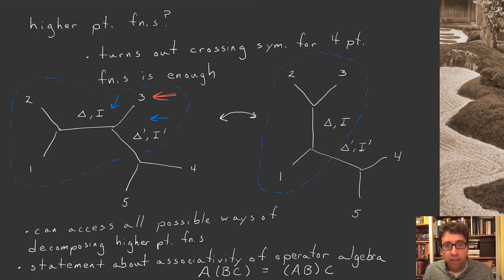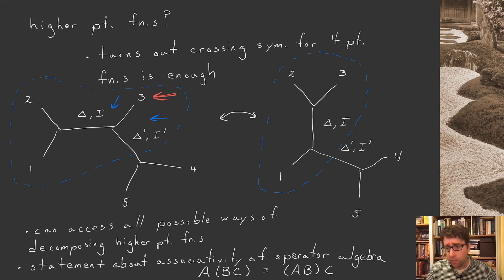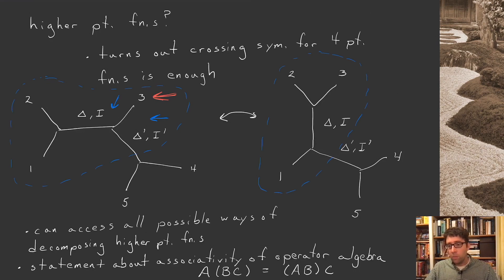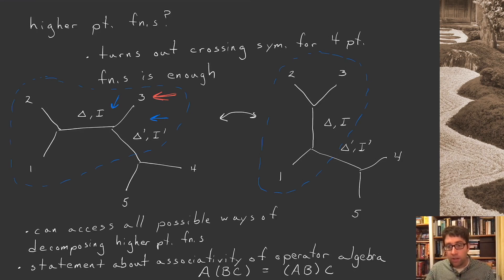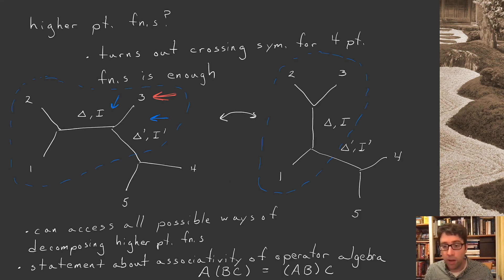That's all for the first mini-lecture. In the next lecture I'm going to take a little break and talk about what unitarity means in the context of conformal field theory — also known as reflection positivity in the Euclidean setting. Then in the third mini-lecture we'll go on to discuss the conformal bootstrap and some results that have come out of it.